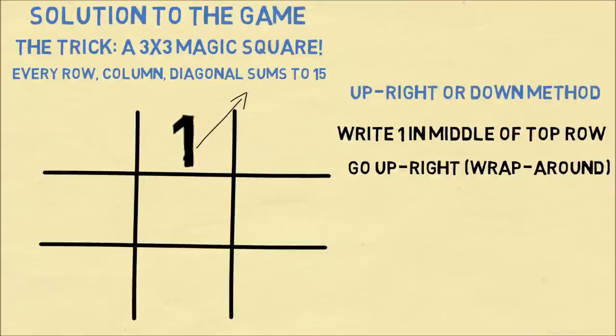Then what you want to do is go up and to the right to get the next number. So here we go up and to the right, and we need to wrap around. So this is where we write the number 2. To get the next number, we go up and to the right. Again, we're going to need to wrap around. And this is where we write 3.